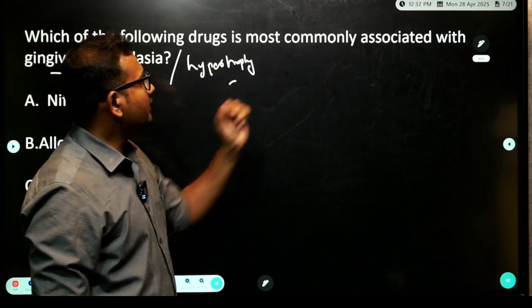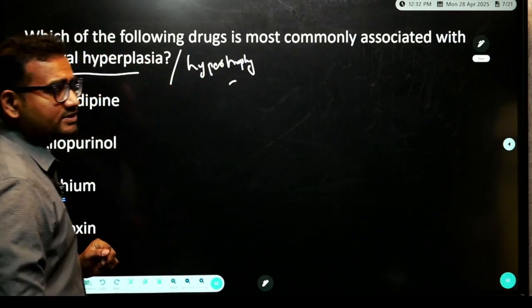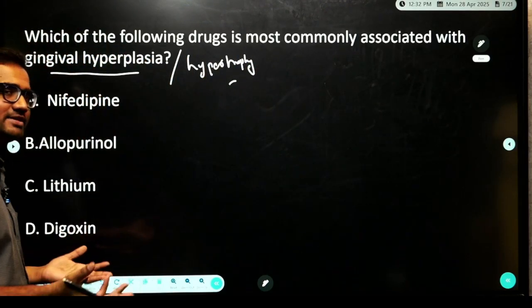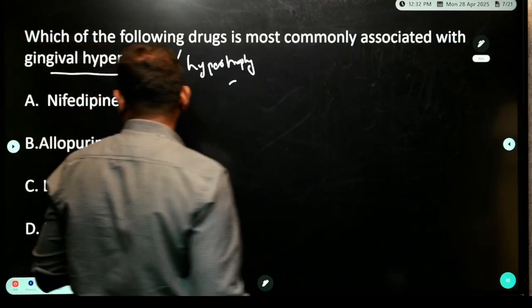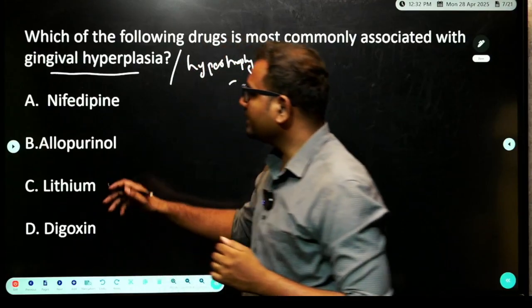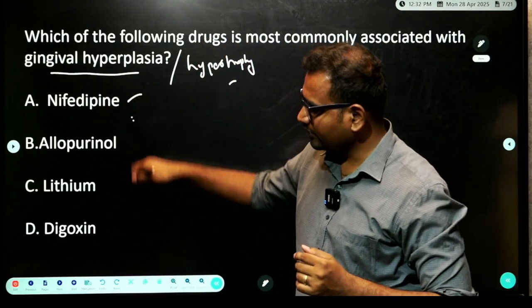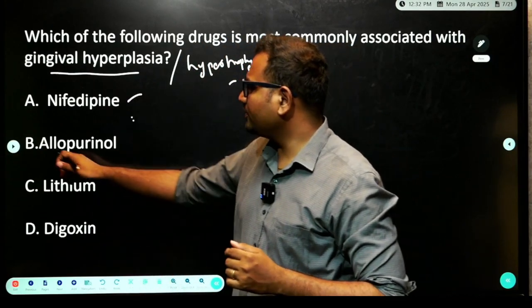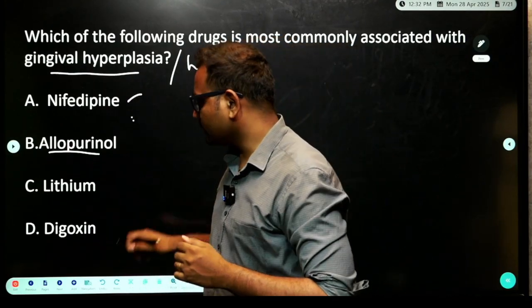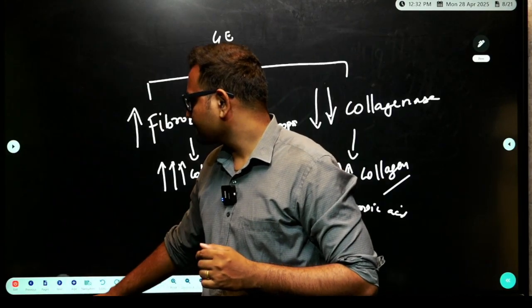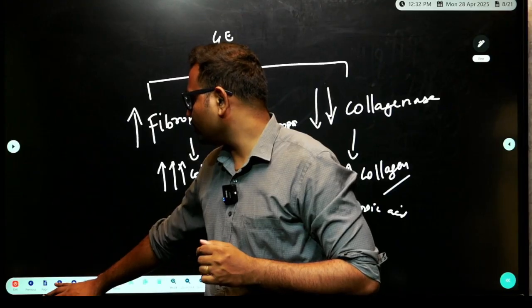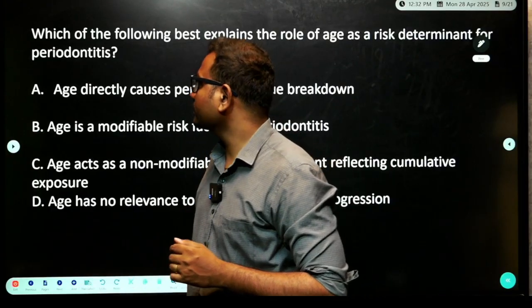Which of the following drugs is commonly associated with gingival hyperplasia or hypertrophy? The answer will be nifedipine. Allopurinol is used for gout.